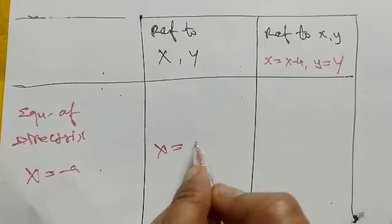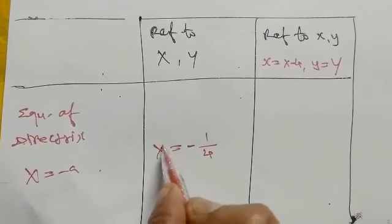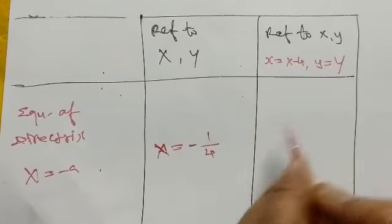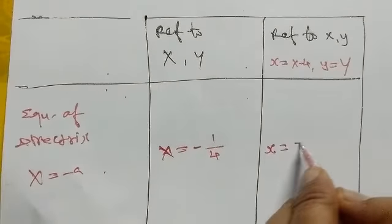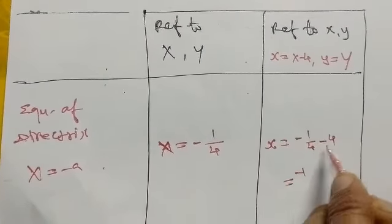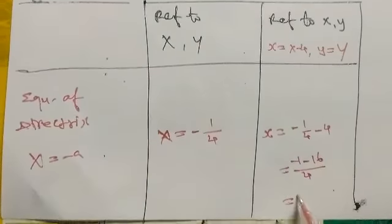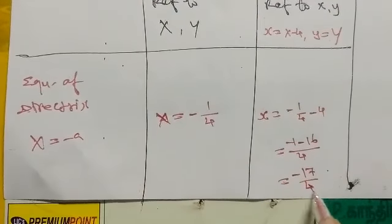When capital X equal to minus 1 by 4, then small x equal to minus 1 by 4 minus 4, which is minus 16 by 4, equal to minus 17 by 4.